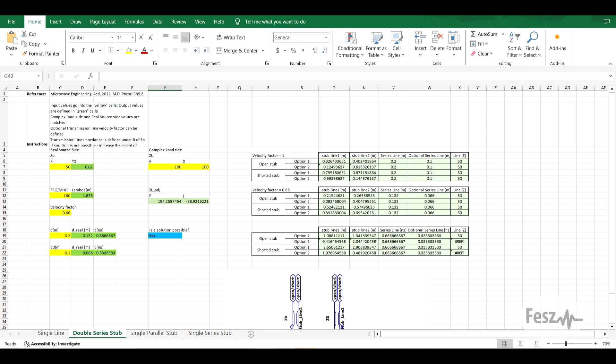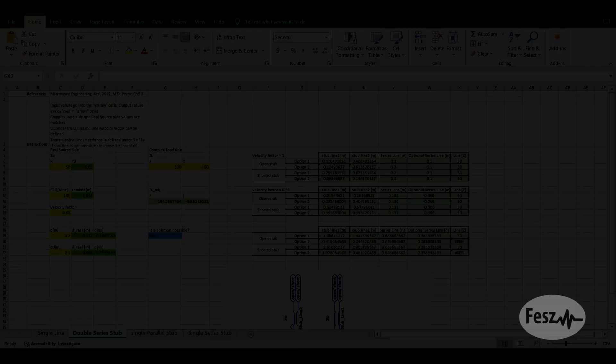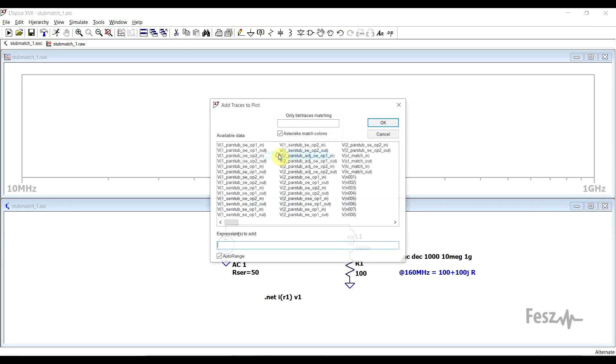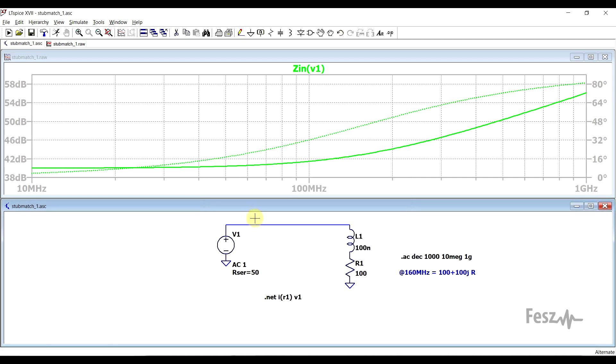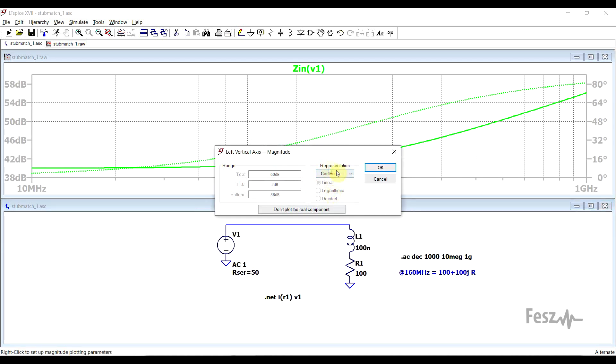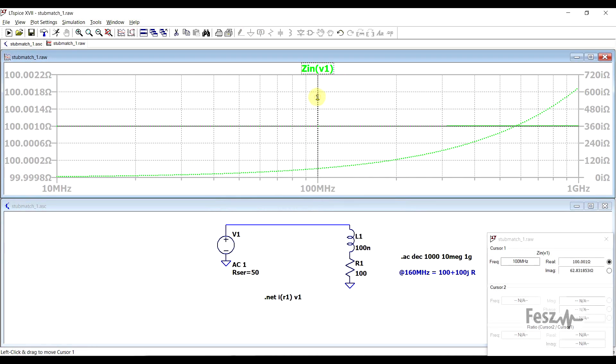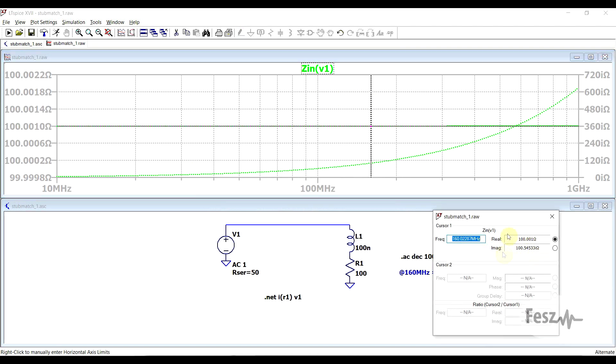Let's now check out some of the results of these calculations. For today's simulations as a test load I will be using a 100 ohm resistor in series with a 100 nanohenry inductor, which at around 160 megahertz gives a complex impedance of 100 plus 100j ohms. If you don't believe me we can quickly check this using a dotnet statement. After simulating, we can look at the impedance as seen from the signal source side and plotting it using Cartesian representation. When we go to the value of 160 megahertz, we can see our 100 plus 100j ohms.